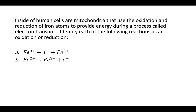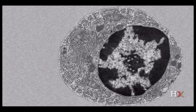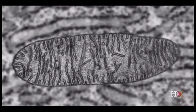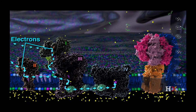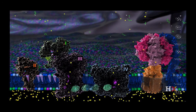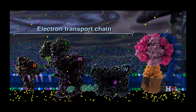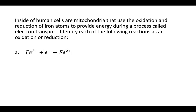Oxidation-reduction doesn't just happen in a laboratory — it happens in all of our cells all the time in the mitochondria. Inside human cells, mitochondria use oxidation-reduction of iron atoms to provide energy during a process called electron transport. You can zoom in on the mitochondria and see those slits in there. Electrons bounce through these almost like balls in a pinball machine, producing energy — that process is called the electron transport chain, and in it, iron atoms inside proteins get oxidized and reduced.